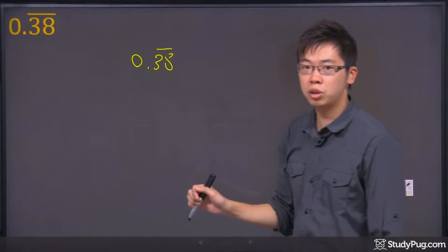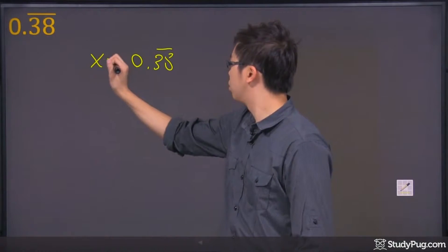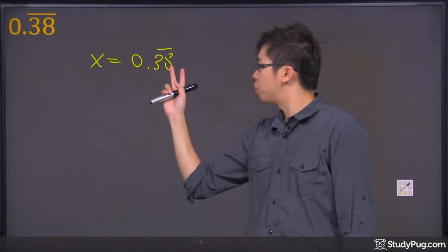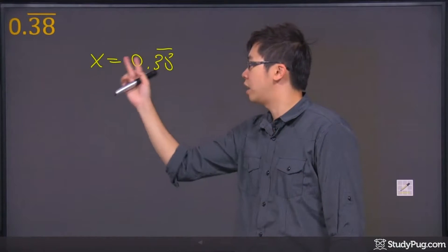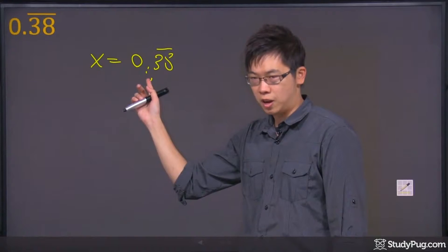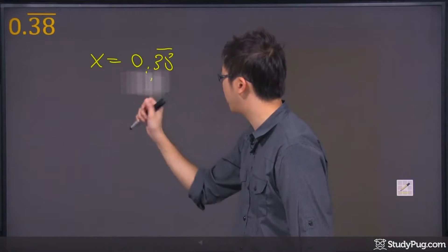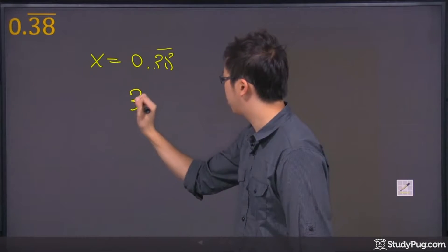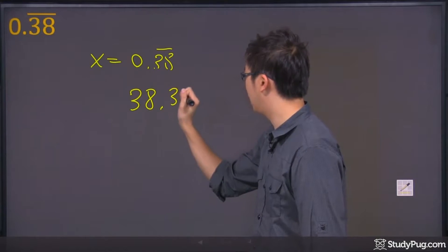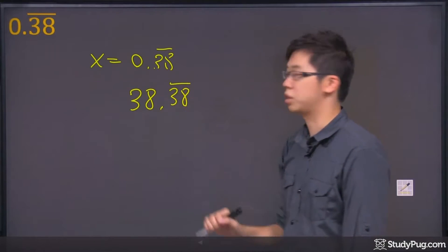And the next thing you have to do is you have to try to put the repeated decimals on the left side of that decimal sign. So basically this is what's going to happen. You're going to change it into 38.38 with repeated decimals just here.